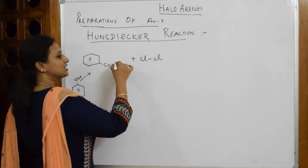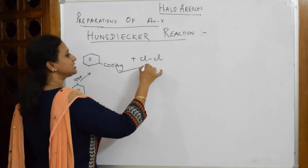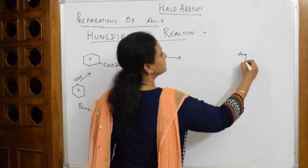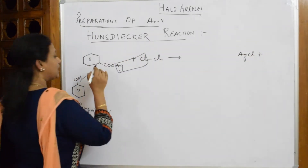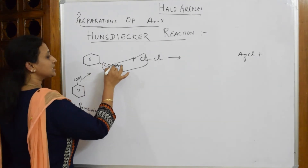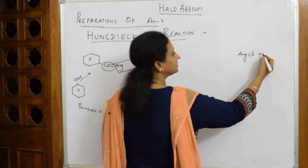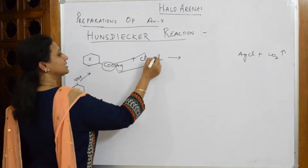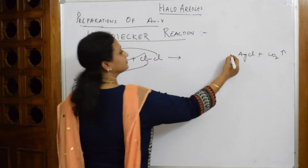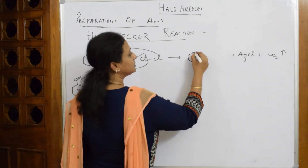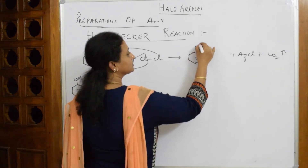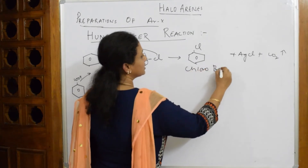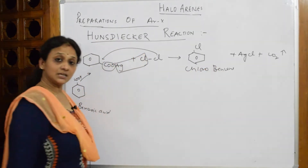First, AgCl is going to precipitate out. After that, carbon dioxide evolves out as a gas. The Cl then goes and attacks the ring, preparing chlorobenzene. So we are preparing chlorobenzene.